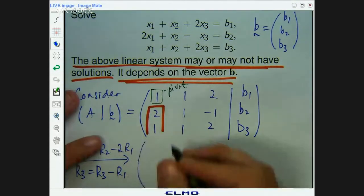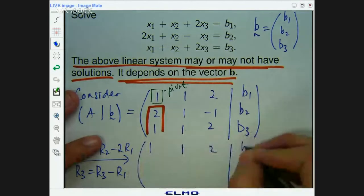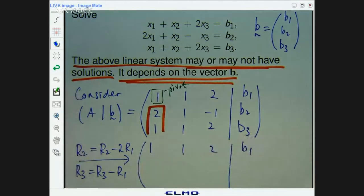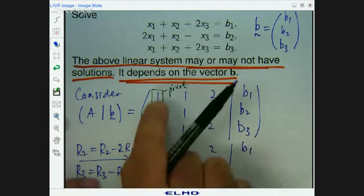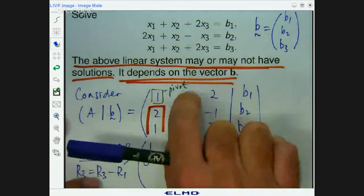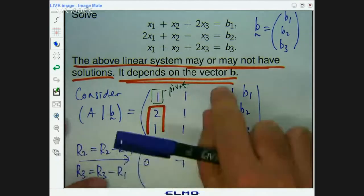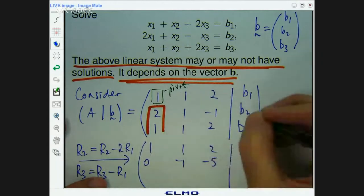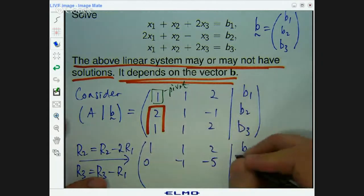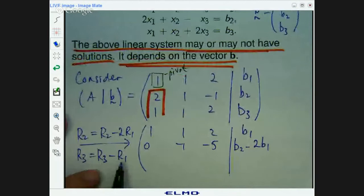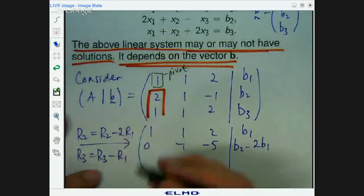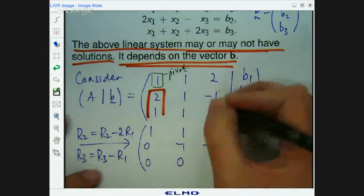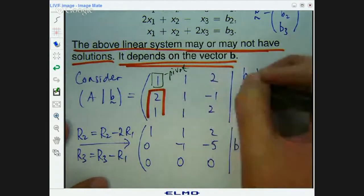Yeah, so let's do the actual operations. Now if you know me I make lots of mistakes here. So hopefully I don't make a mistake. So 2 minus 2 times 1 is 0, 1 minus 2 times 1 is negative 1, negative 1 minus 2 times 2 so that's negative 1 minus 4, that's negative 5. B2 minus 2B1. Well we don't know what B1 and B2 are, so we just got to leave it like that. Row 3 minus row 1. So 1 minus 1 is 0, 1 minus 1 is 0, 1 minus 1 is 0, 2 minus 2 is 0. B3 minus B1. We don't know what those are, so that's the best we can do.